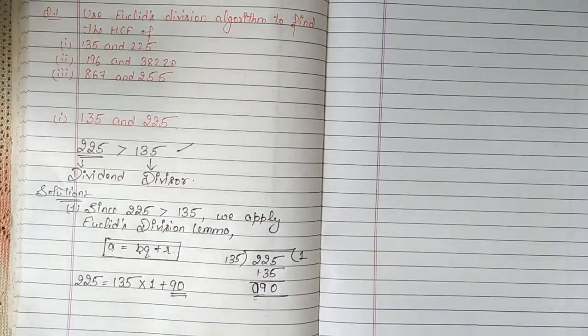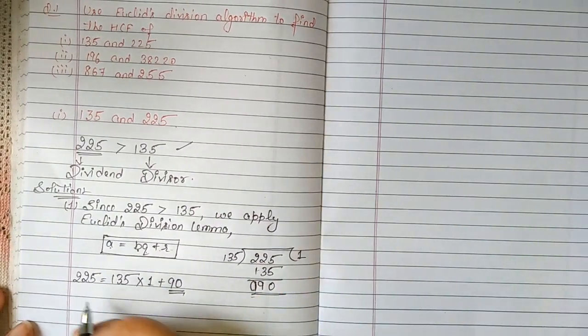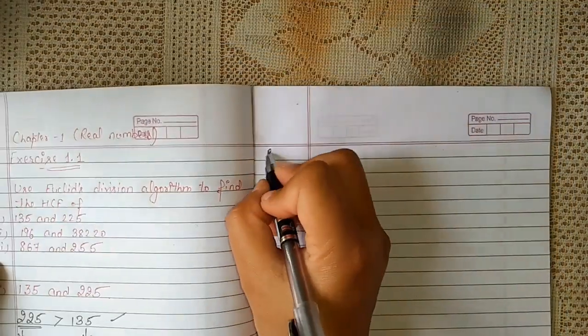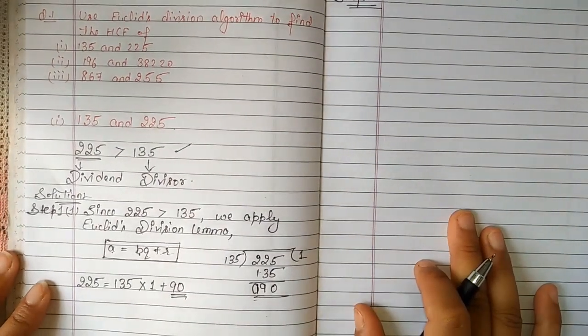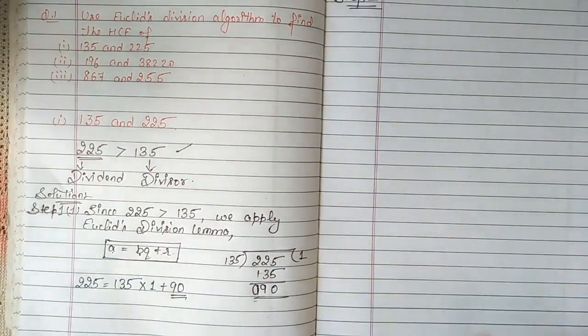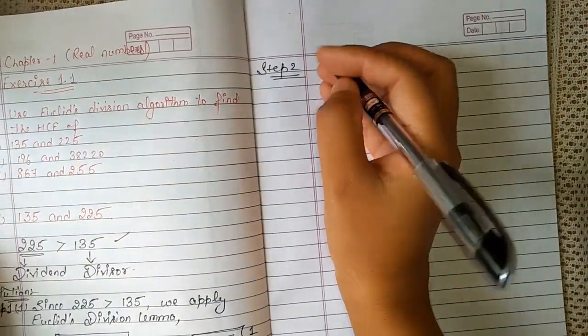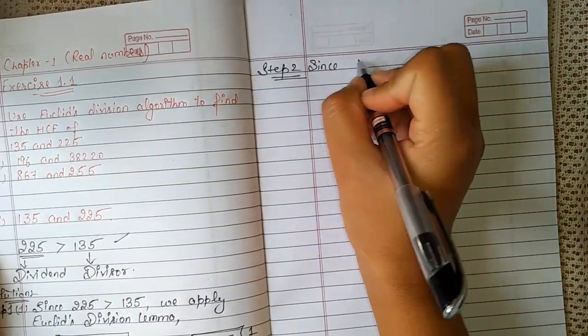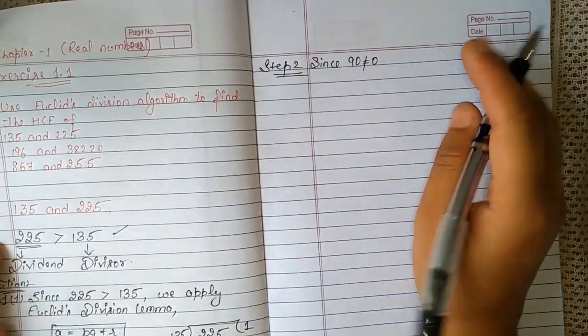So this is your first step and your remainder here is 90, not coming to 0. So we will continue this algorithm until the remainder becomes 0. Since 0 is not coming, we will start step 2. This is step 1.